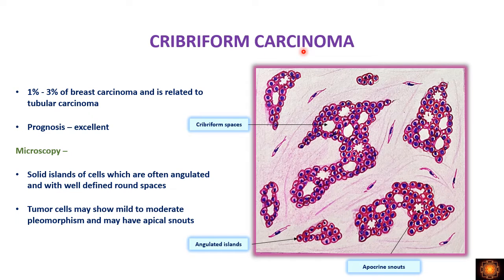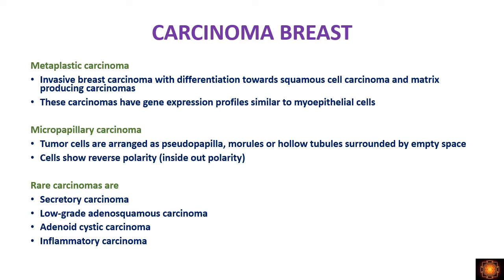Cribriform carcinoma comprises 1–3% of breast carcinomas and has excellent prognosis. It is related to tubular carcinoma. Microscopically, we have islands of cells with angulated contours containing well-defined punched-out round spaces — this is the cribriform pattern. In those punched-out spaces we find apocrine snouts, similar to tubular carcinoma, which is why they are considered related.